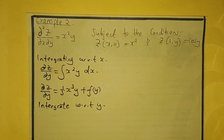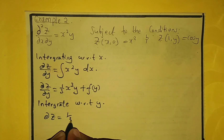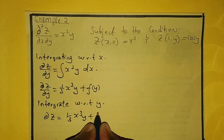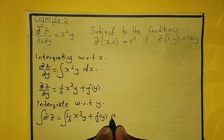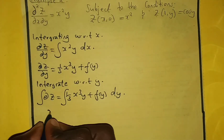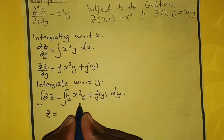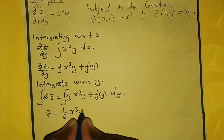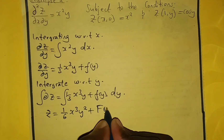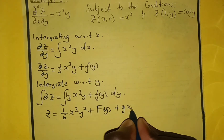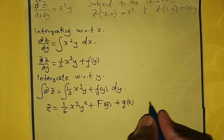Now we integrate with respect to y. So we have ∂z/∂y = (1/3)x³y + F(y), and integrating with respect to y gives z = (1/6)x³y² + F(y) + g(x), where g(x) is an arbitrary function of x. We can call this equation number 1.